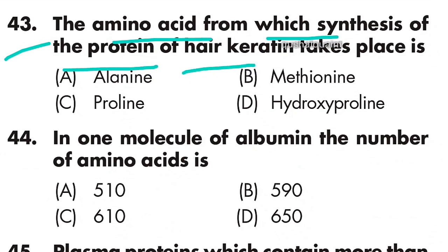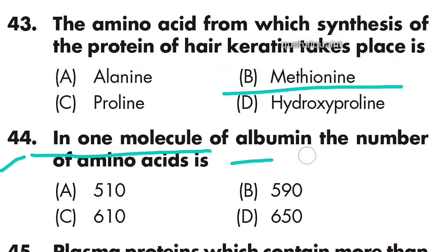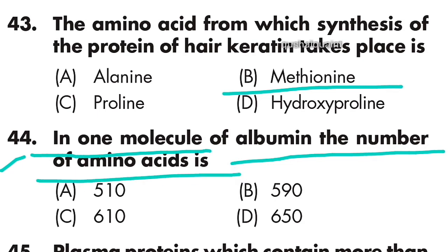— the amino acid from which synthesis of hair keratin takes place is methionine — option B is right. Question 44: In one molecule of albumin, the number of amino acids is — option C is right — 610.